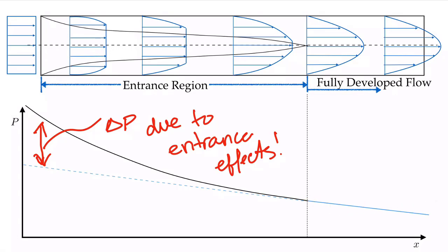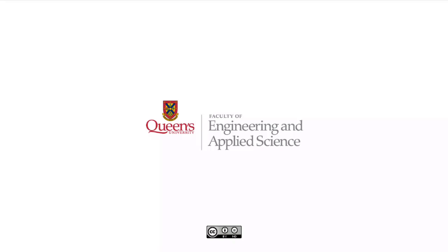In almost all practical piping situations, if the pipe runs extend for tens or even hundreds of meters, the pressure drop is dominated by the fully developed region overall. Even though drawing the entrance region larger makes the entrance pressure drop look significant, in a very long pipe run, the entrance region will be negligible compared to the total drop. In the next videos, we'll look at how to calculate the actual numerical values for pressure drops in pipe flows.